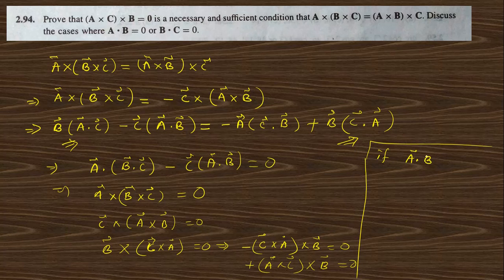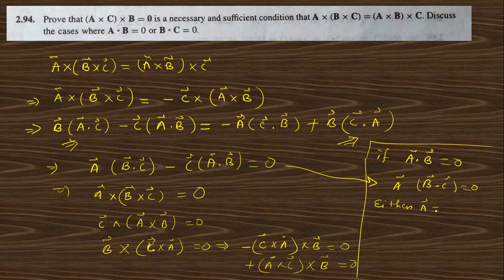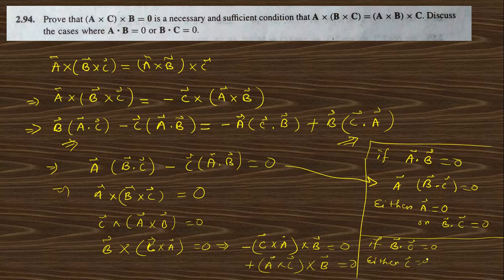Now if a dot b equals zero, from the equation you can see that either vector a is zero or (b dot c) is zero. Similarly, if b dot c equals zero, then either vector c is zero or (a dot b) is zero. This establishes the necessary and sufficient condition.